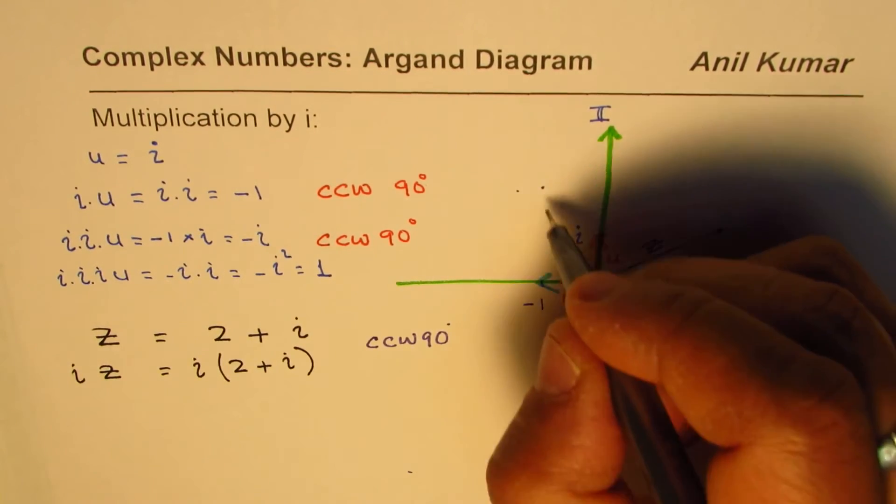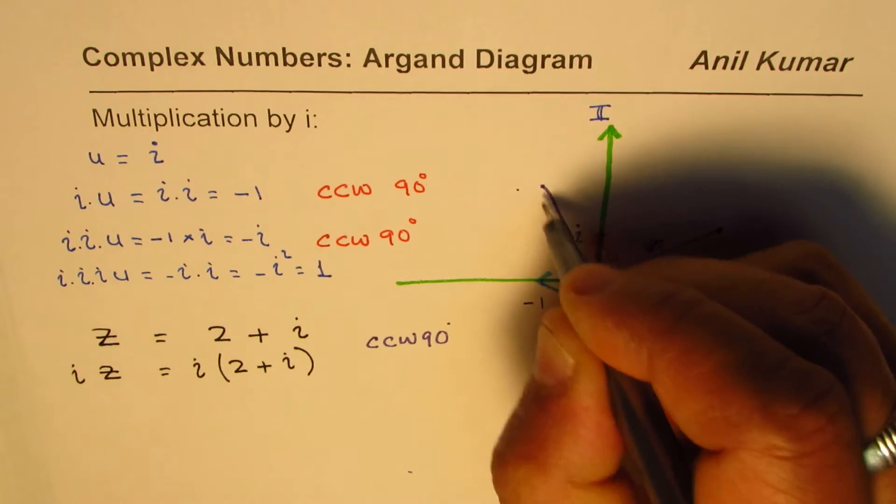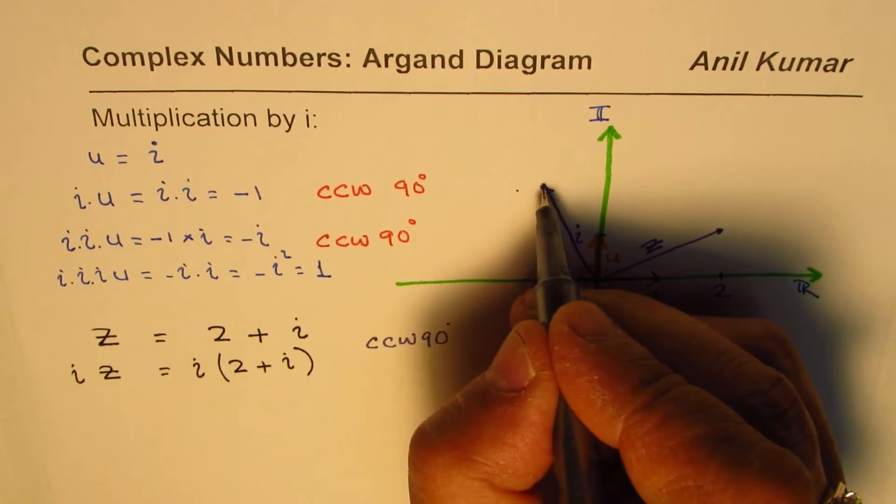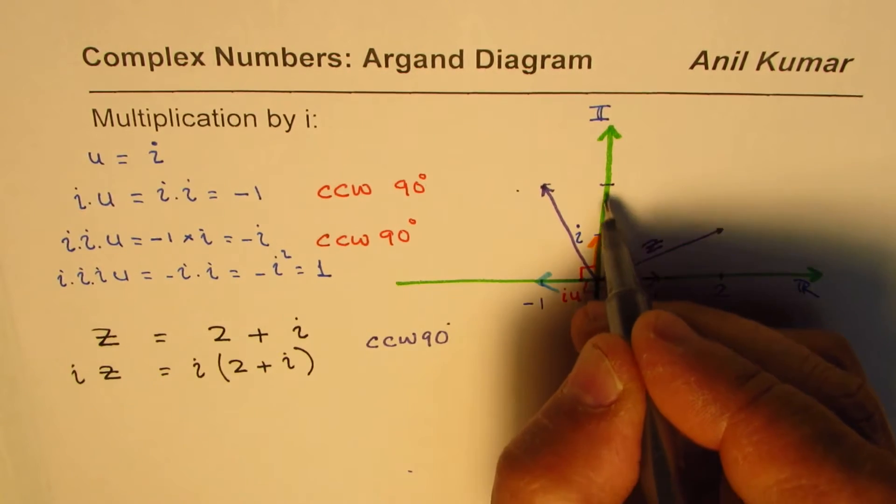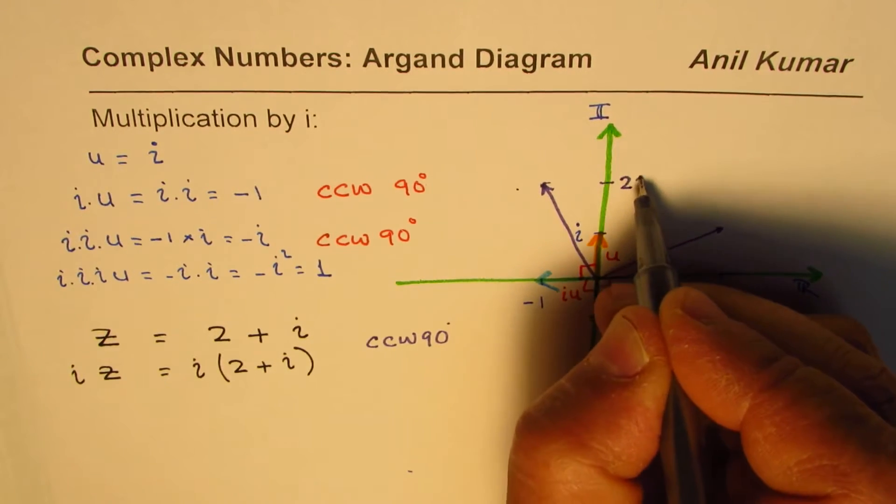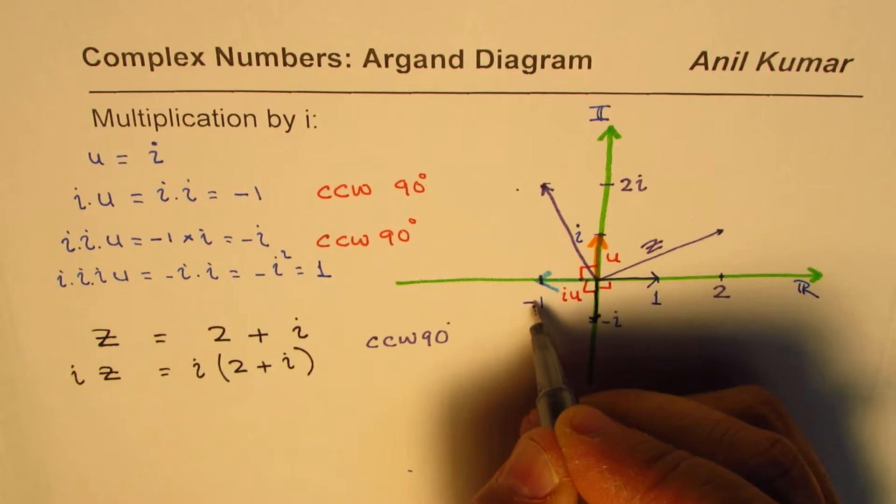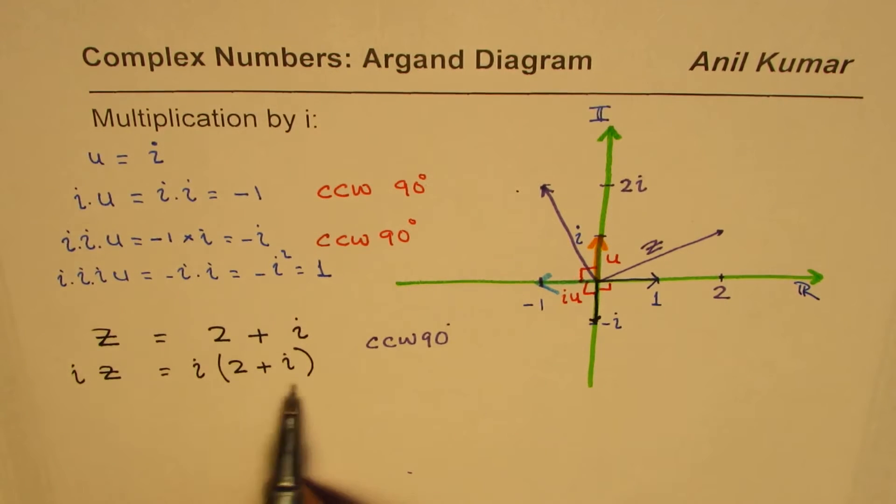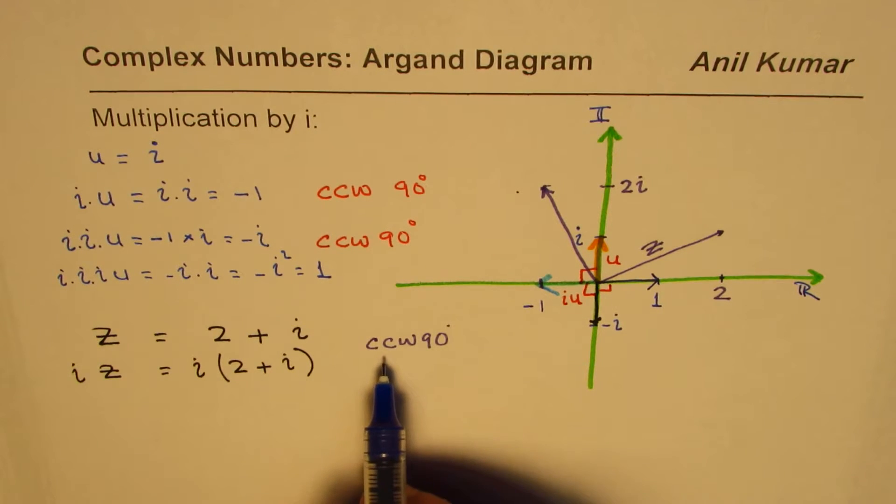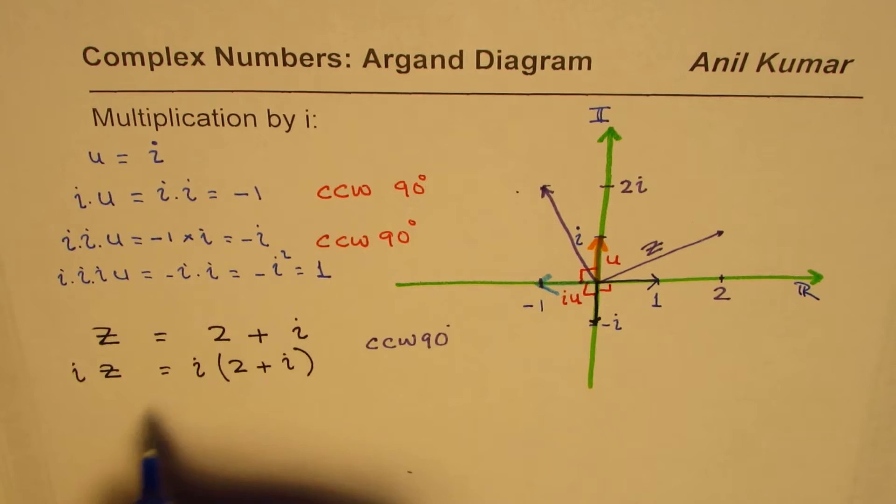That means it should be kind of here. So we should expect this complex number to be at this place, where this point is 2i and this point is minus 1. Let us see when we multiply, do we get the same result? If we get, we know it is rotated counterclockwise by 90 degrees.